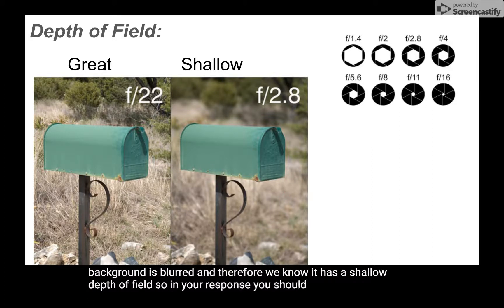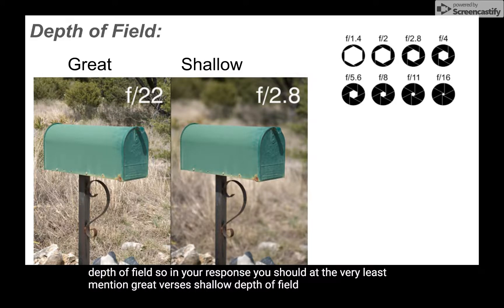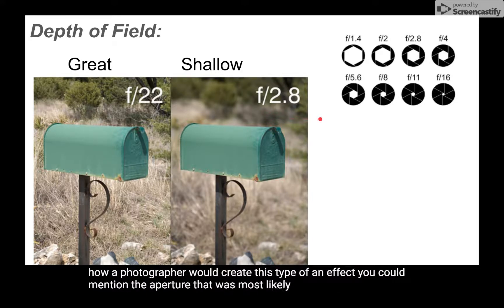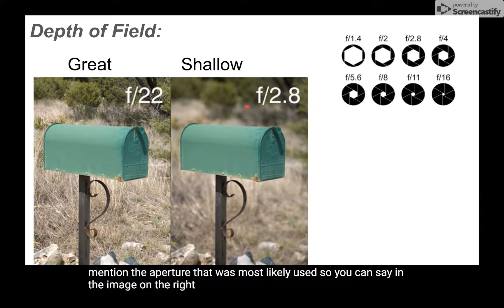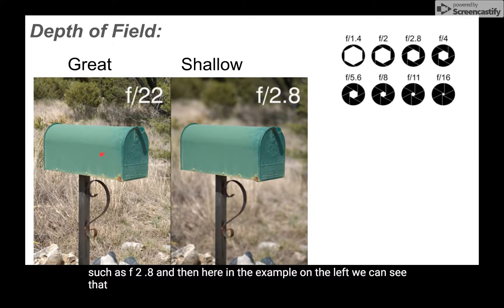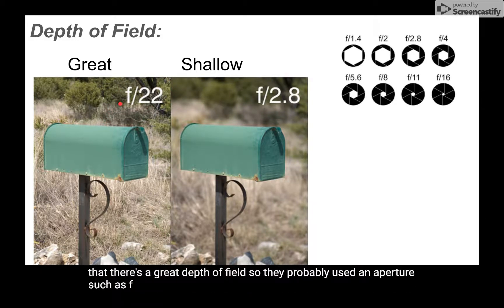In your response you should at the very least mention great versus shallow depth of field, and when asked how a photographer would create this type of effect, you could mention the aperture that was most likely used. In the image on the right, they probably used a smaller f-number such as f/2.8, and in the example on the left with great depth of field, they probably used an aperture such as f/22.